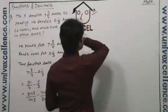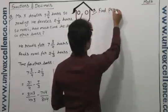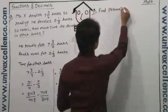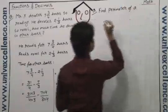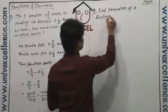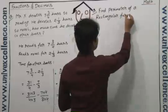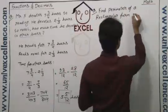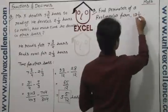Our next question says: Find perimeter of a rectangular form.